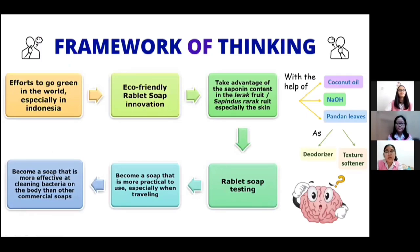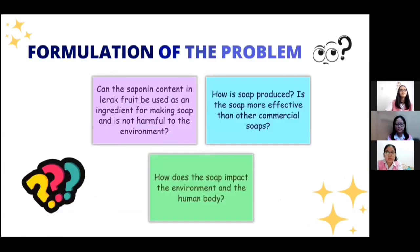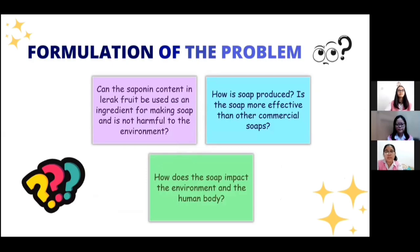We conclude this framework of thinking from the preliminary and material roles. Here is the formulation of the problem that we use for this research. First, can the saponin content in laraq fruit be used as an ingredient for making soap and is it not harmful to the environment? Second, how is the soap produced, and is the soap more effective than other commercial soaps? Third, how does the soap impact the environment and the human body?